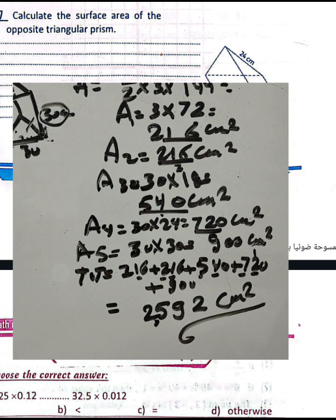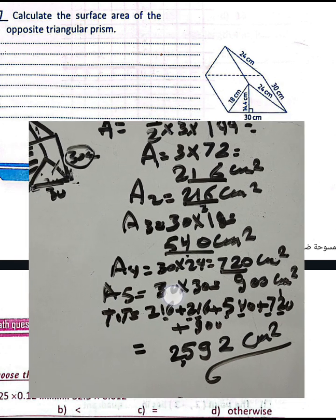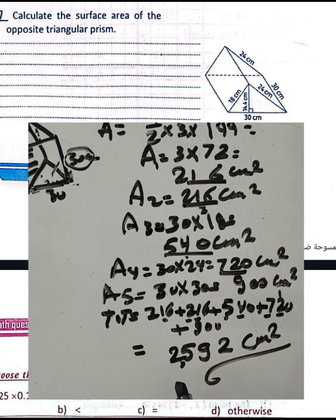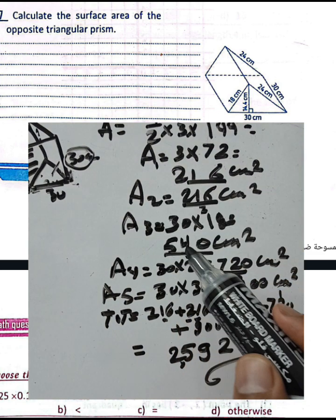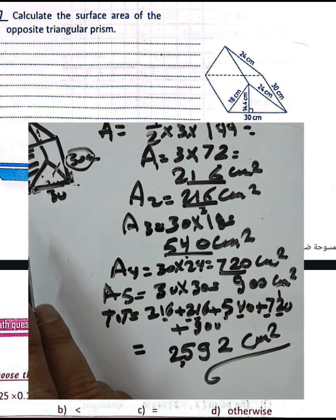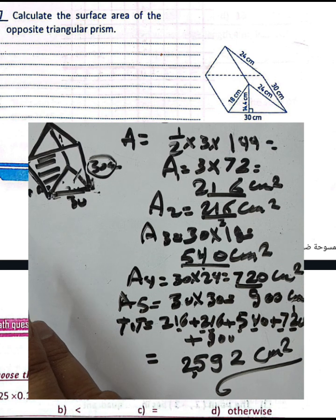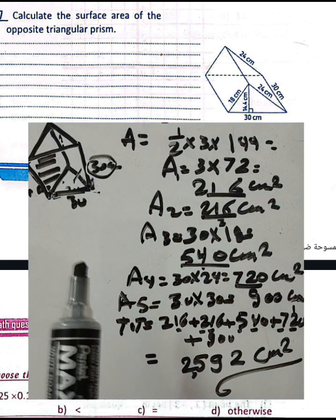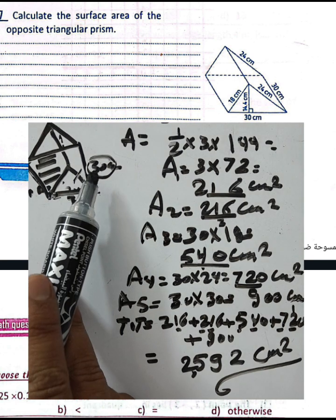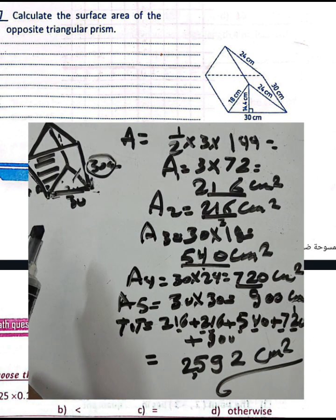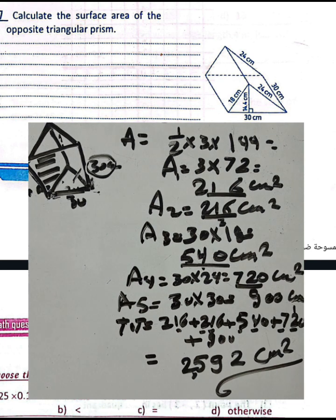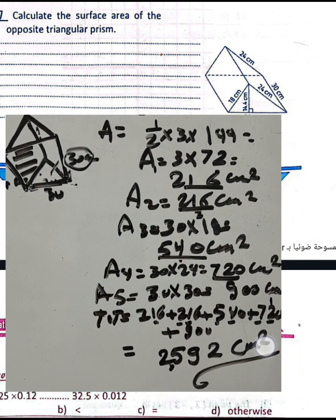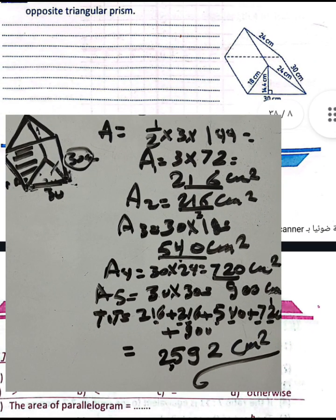To summarize, the triangular prism has five faces: two congruent triangles and three rectangles with different areas because their dimensions differ. The base is a square with side 30 centimeters, giving an area of 900 square centimeters.